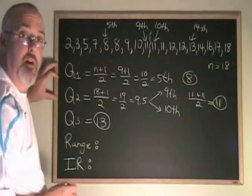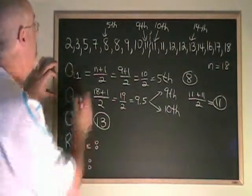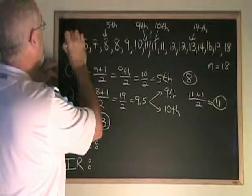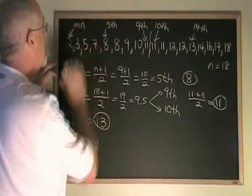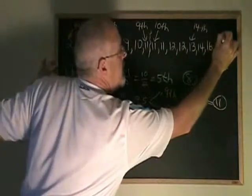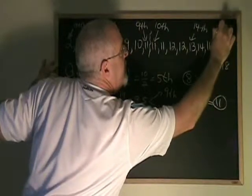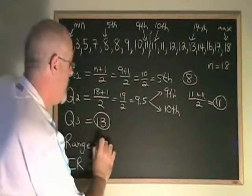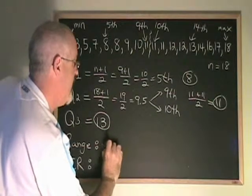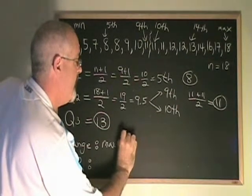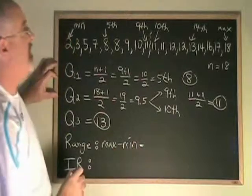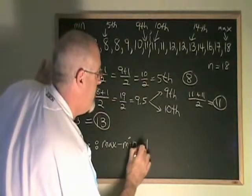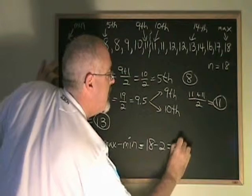To find the range, we need to know the minimum and maximum data values. So let's point them out as well. Our minimum is 2, and our maximum is 18. Range is equal to maximum minus minimum, which in this case is equal to 18 minus 2, 16.